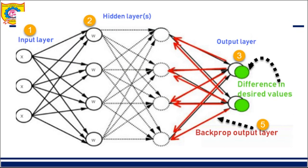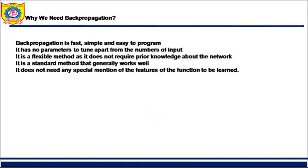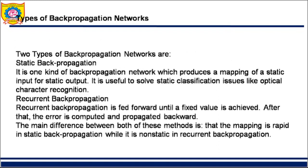Our next video will have examples on backpropagation. Here I have just covered the theory. What is the need for backpropagation? It is simple and easy to program. For machines it is easy to operate, though for humans it seems complicated. It has no parameters to tune apart from the number of inputs, so it is a flexible method that does not need any special mention of features or functions to be learned. We say that backpropagation is simple.